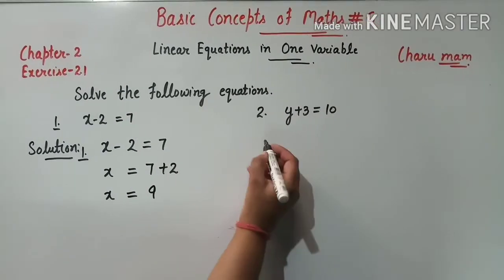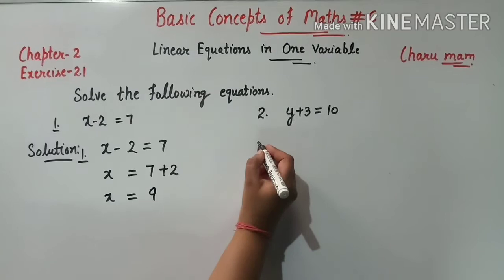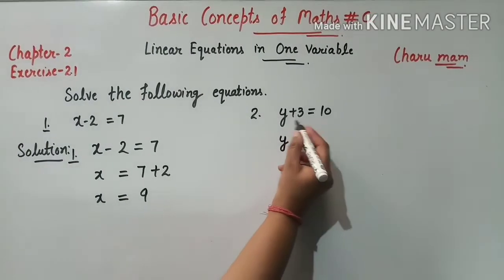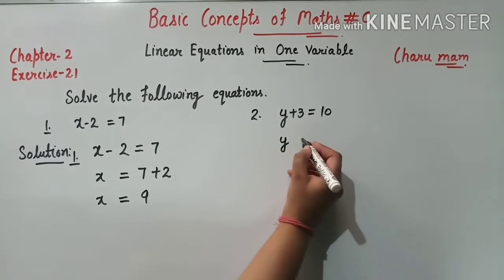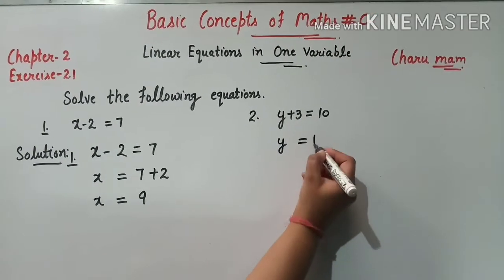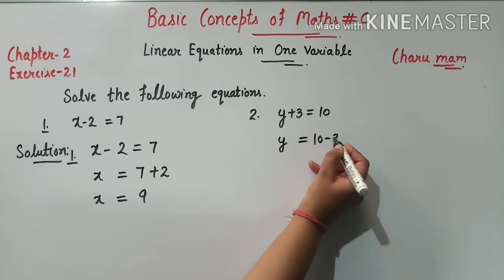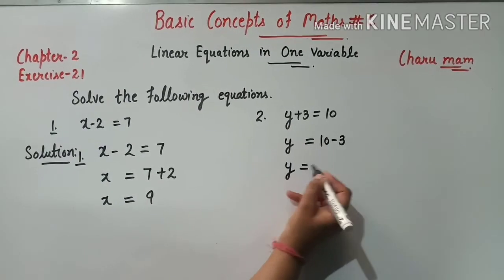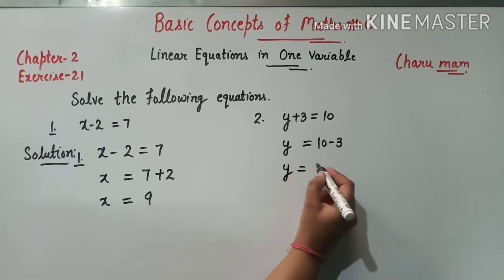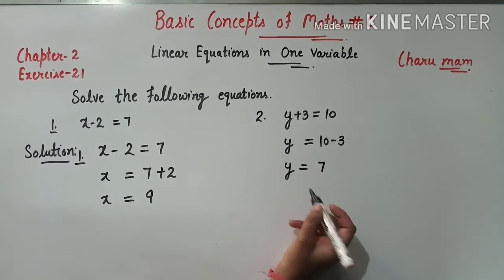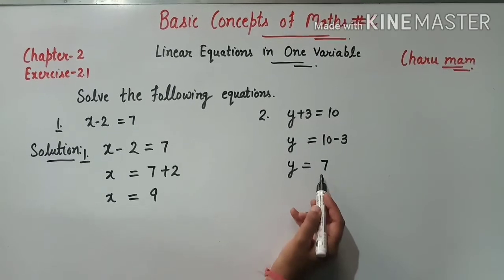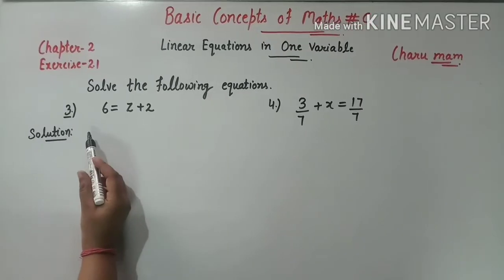Similarly, question 2: y + 3 = 10. Plus 3 right side जाएगा तो minus 3 हो जाएगा. Simplify करेंगे: 10 minus 3 equals 7. So y की value है 7.